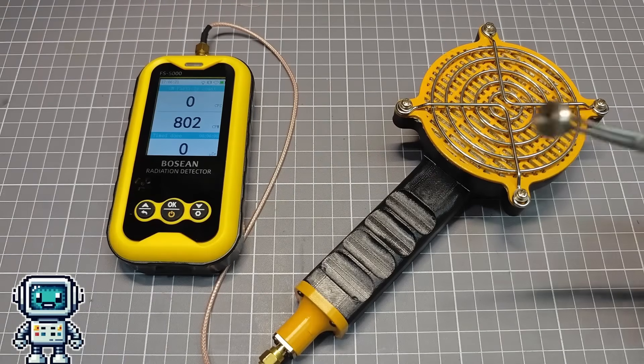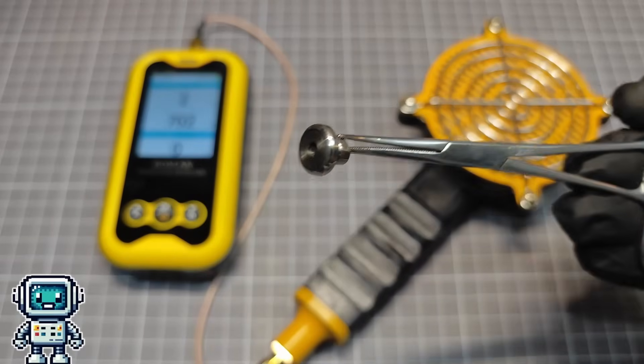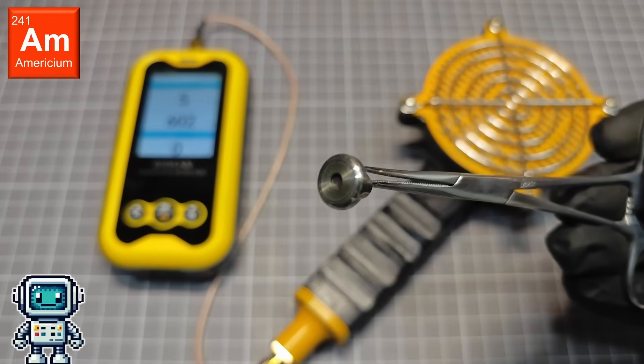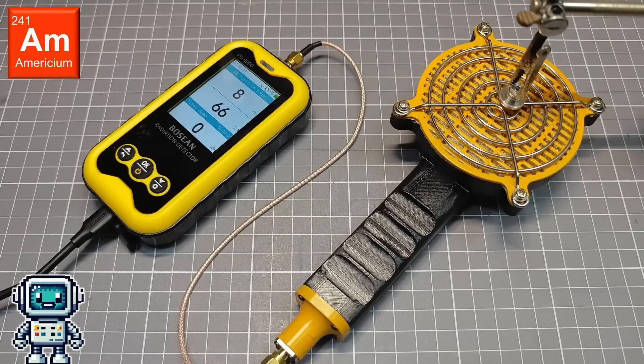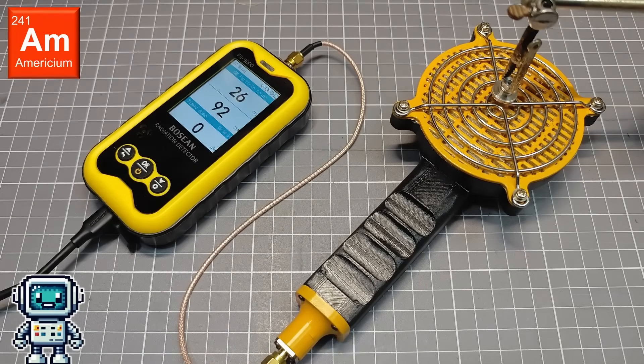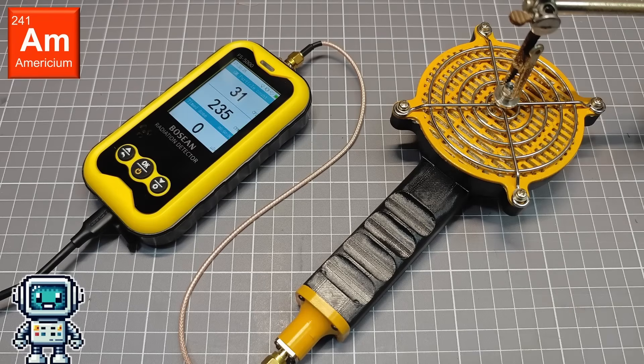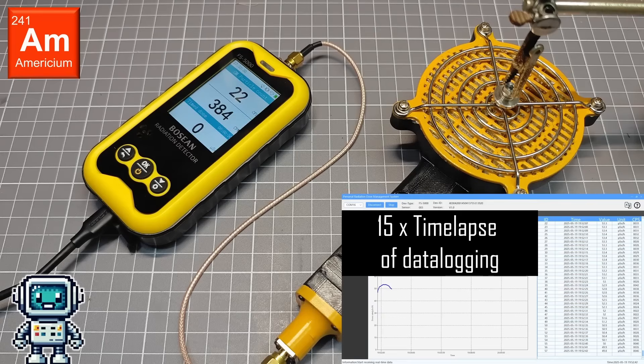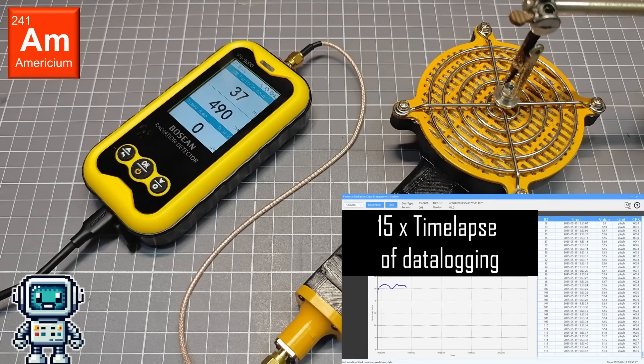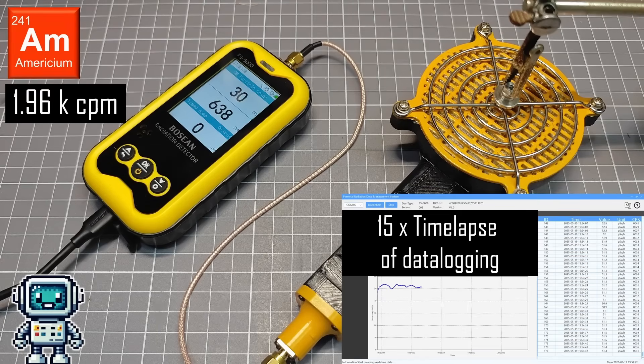Right, let's push on and measure some test sources. First, let's test with americium-241. This predominantly decays with the release of an alpha particle, but there is also a small amount of low energy gamma radiation emitted as well. We are dearly hoping that this probe is also sensitive to alpha particles, it would make it a very useful addition to our equipment. We end up getting an average count rate of 1.96 kilo counts per minute.